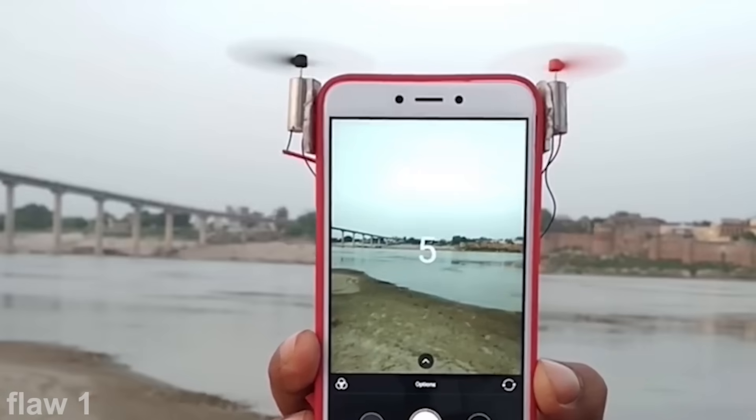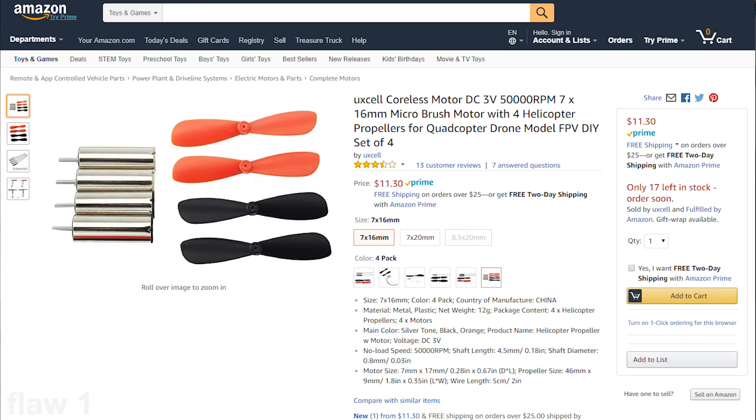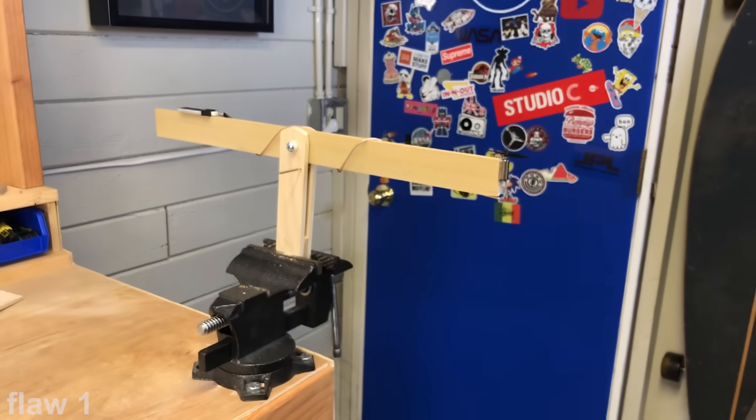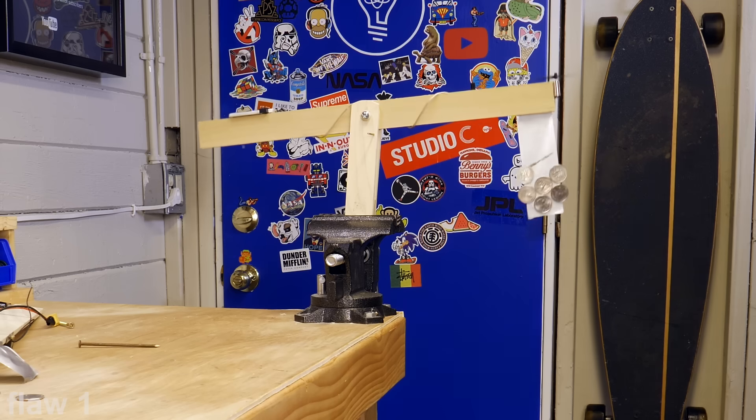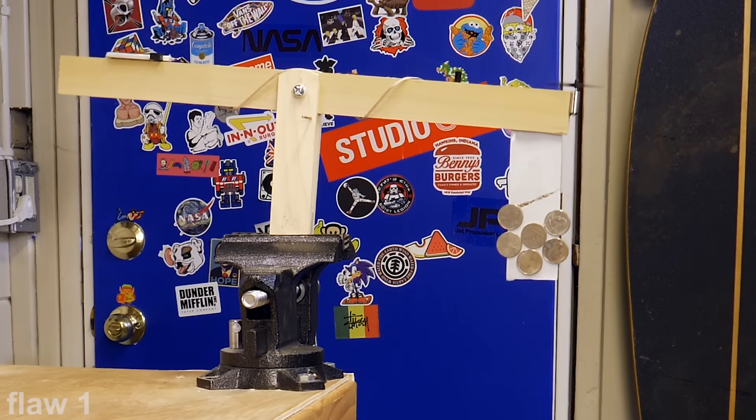But as for it being fake, the first clue is that these are 3-volt, 7-millimeter microbrush motors, like you see here. If you attach one to a beam like this, and turn it on at full throttle, you'll see the most weight that it can lift is 6 quarters, or about 30 grams.